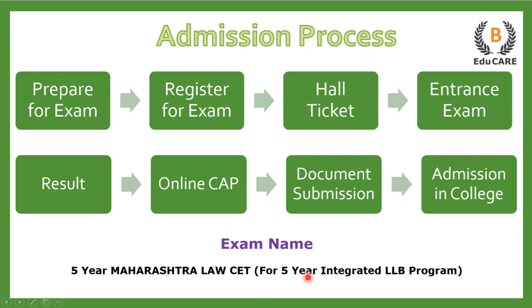Talking about the admission process for the 5-year integrated LLB program, you need to appear for the 5-year Maharashtra Law CET examination. The first step is to prepare for the exam, then register yourself for the examination. After that, you get a hall ticket, go to the examination center, and appear for the entrance exam. You then get your results and on the basis of that, an online centralized admission process — which we call CAP Round B — takes place, wherein you select college preferences and finally get admission in that particular law college.